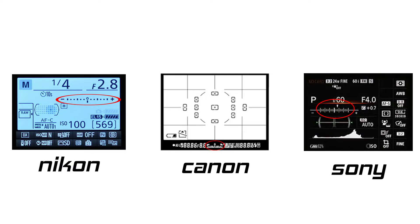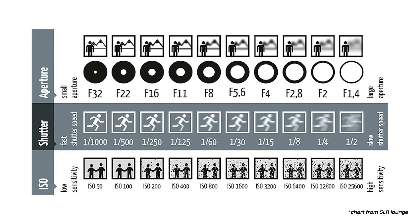The first thing you need to understand is how exposure works. Inside your camera, every camera has a metering system. If you look through your viewfinder, that's the lines that usually has a negative and a positive on one side and a zero in the middle. That's the tool that's going to help you get proper exposure. There are three things that add up to get that exposure: shutter speed, aperture, and ISO.